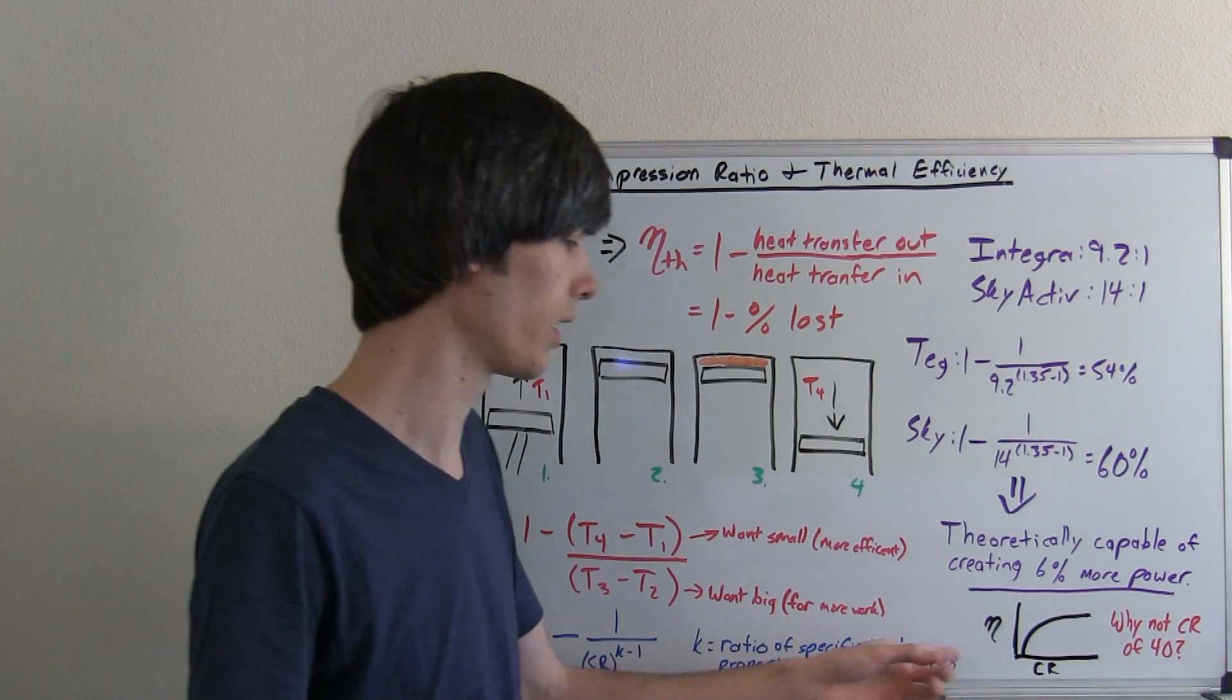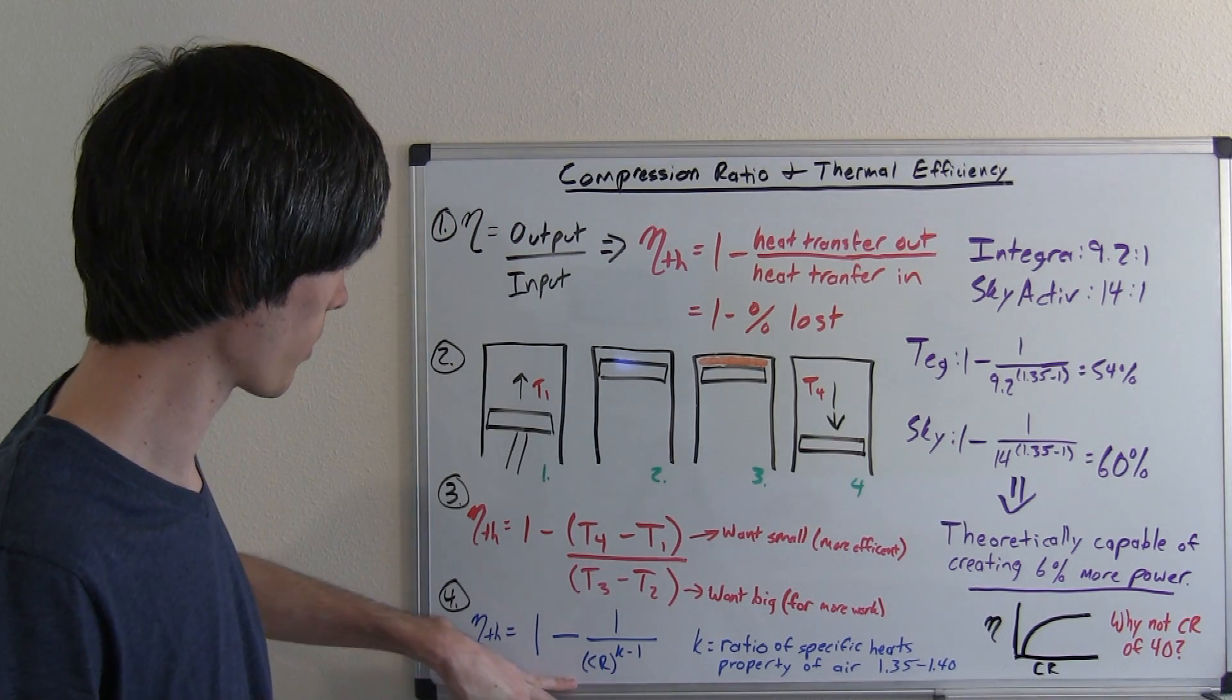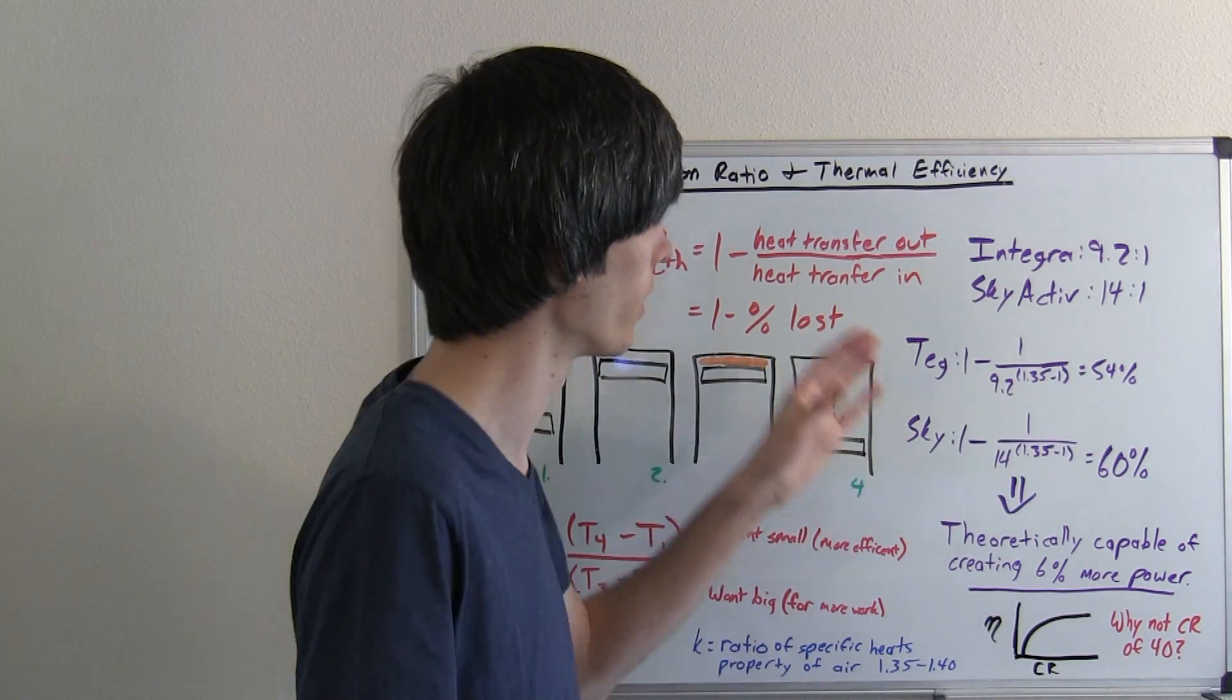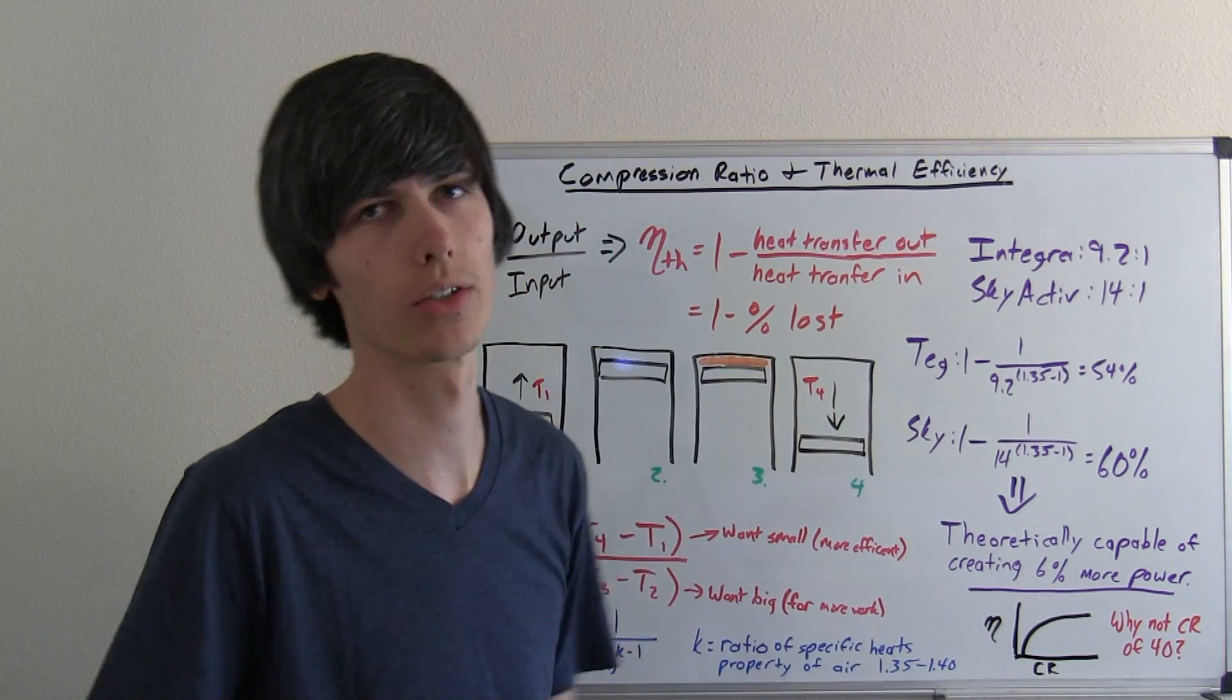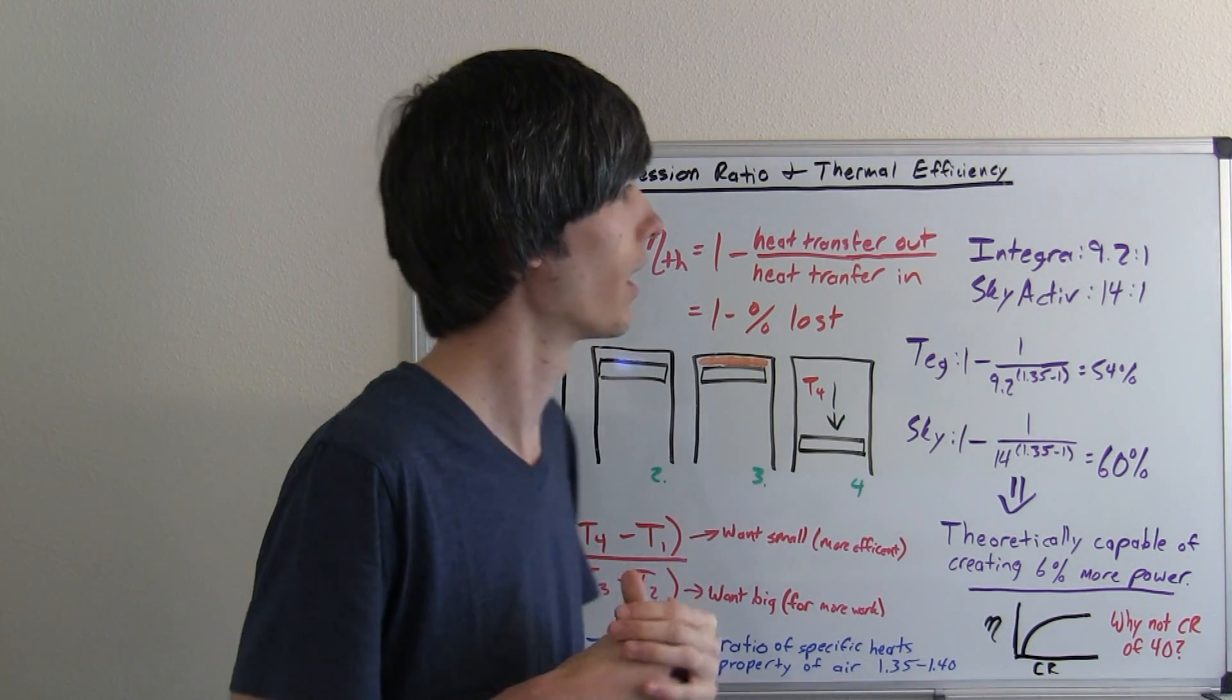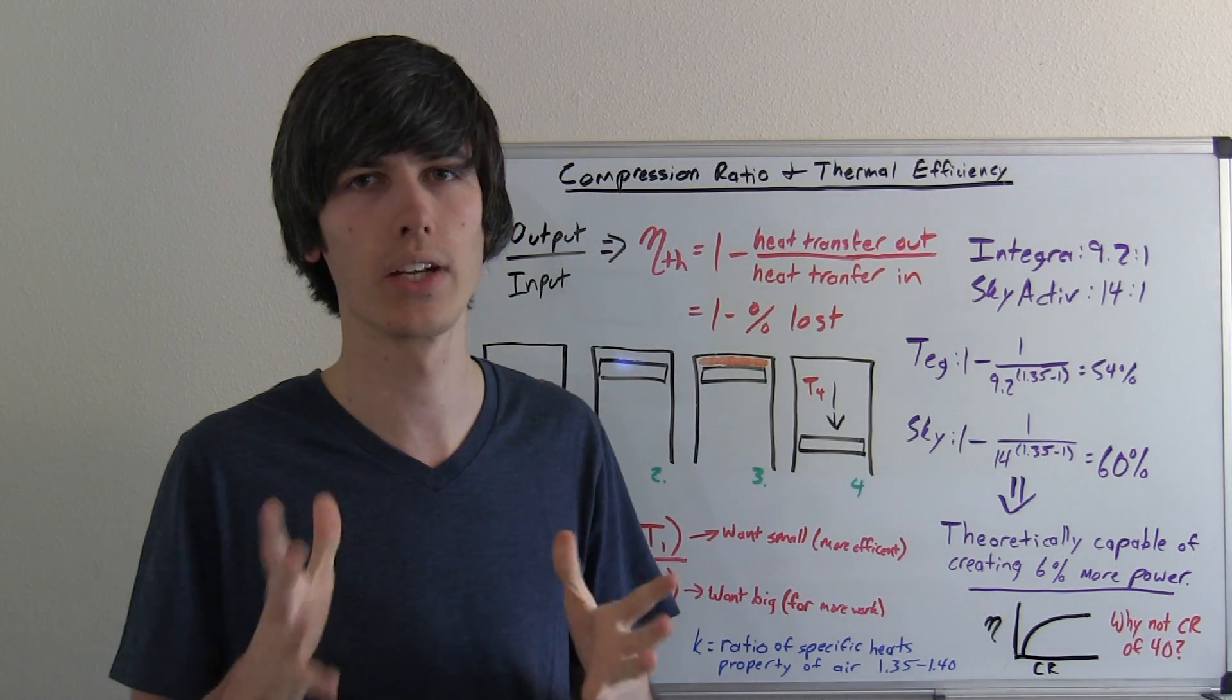You can see it used with 1.4. But anyways, let's just go over some examples of using this equation. So my Integra can't win every battle there is out there. It can win most of them, but here is an example of where it will lose. So my Integra has a compression ratio of 9.2 to 1. That's how it was designed. Mazda SkyActive technology that they've got going in their European engine has a compression ratio of 14 to 1.